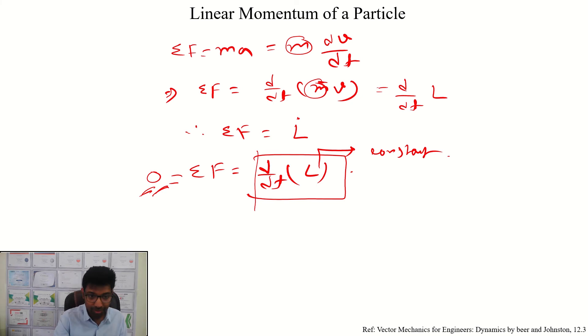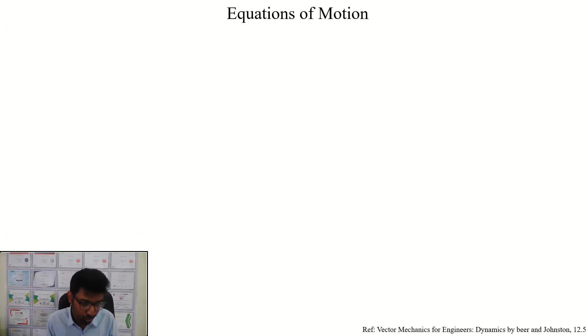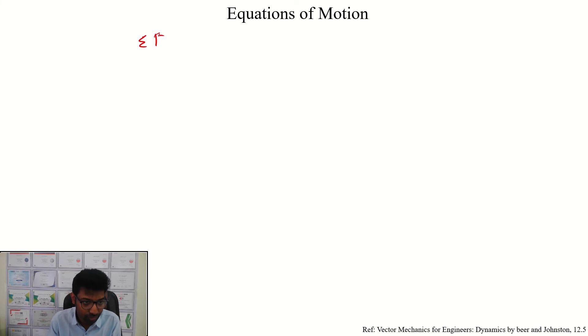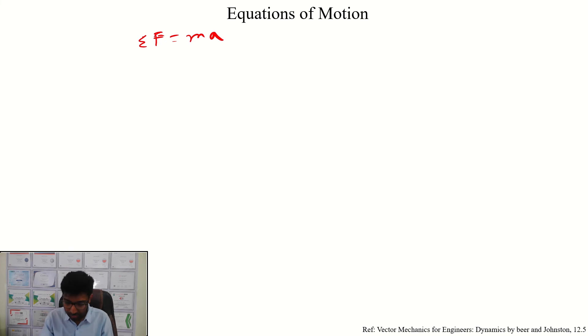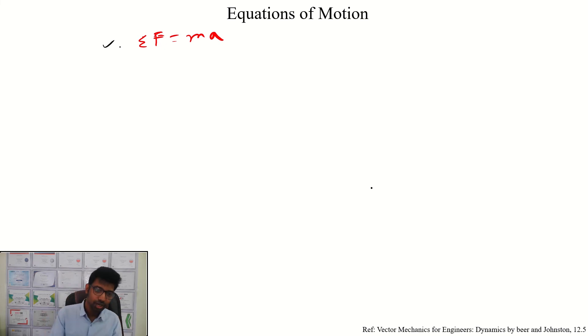Now we will be talking about different equations of motion. The summation of force is basically equal to m into a. Let us change the color. So the summation of force is equal to mass into acceleration.